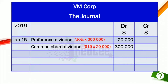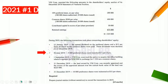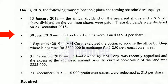In total, the dividend paid out is: preference dividend $20,000 plus common share dividend $300,000, giving us $320,000. This indicates that our cash decreases by $320,000, so there is a credit entry to cash of $320,000.